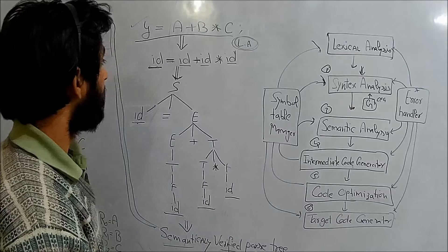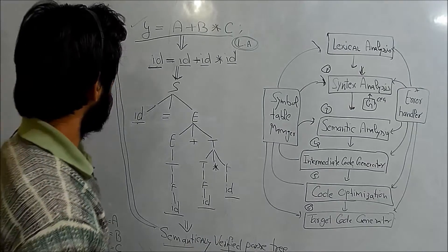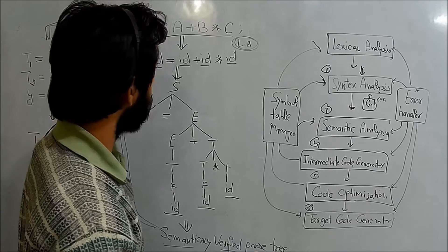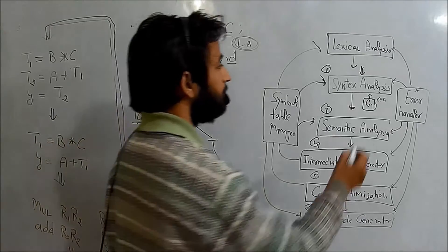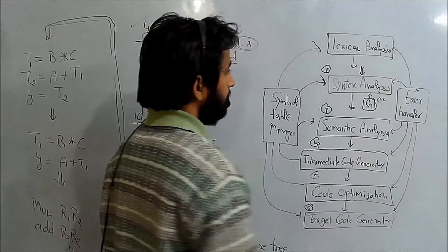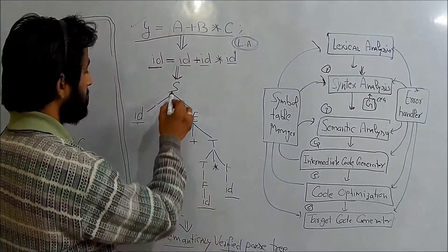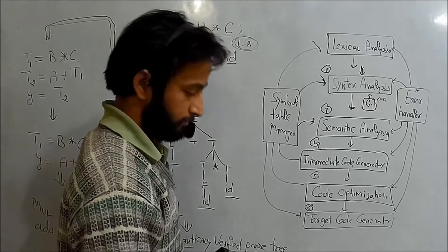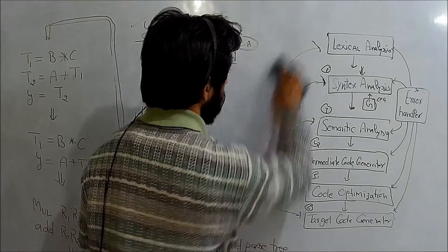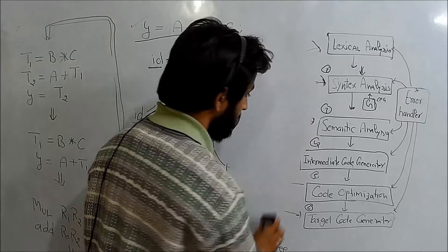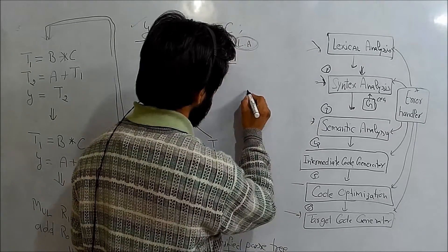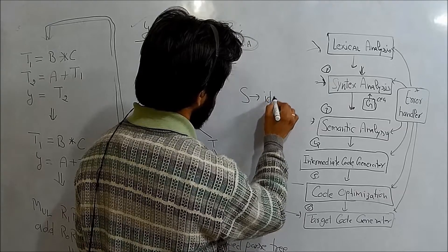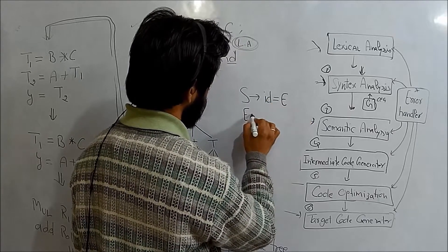This stream of tokens is fed into our next stage, the syntax analyzer. The syntax analyzer will take that stream and with the help of grammar it will generate a parse tree. The grammar is predefined: S derives id = E.